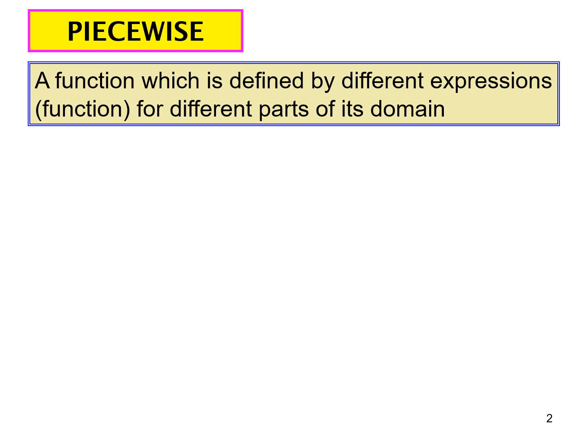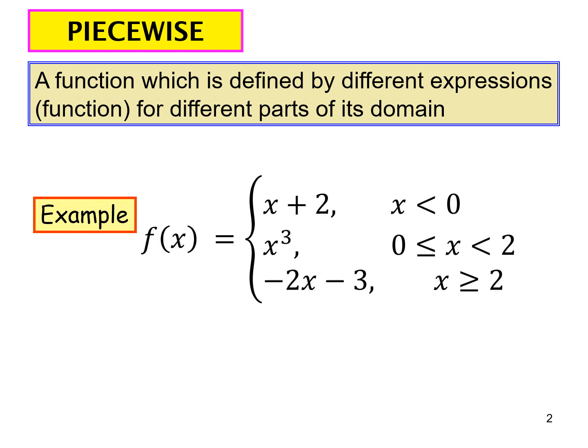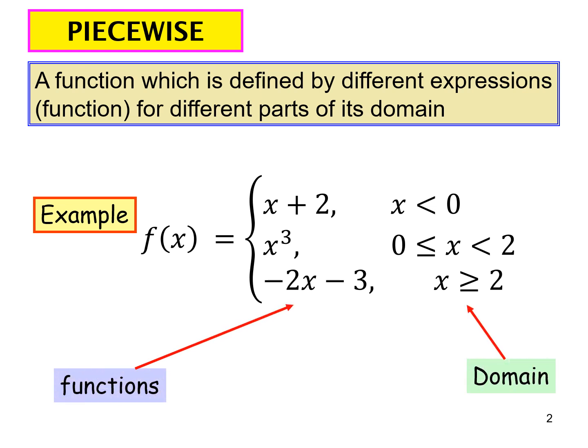A piecewise function is a function which is defined by different expressions for different parts of its domain. For example, let's say we have a function defined by three parts: x plus 2 where x is less than 0, x cubed for the half-open interval 0 to 2, and negative 2x minus 3 for x greater than or equal to 2. The left side gives the functions; the right side gives the domains.